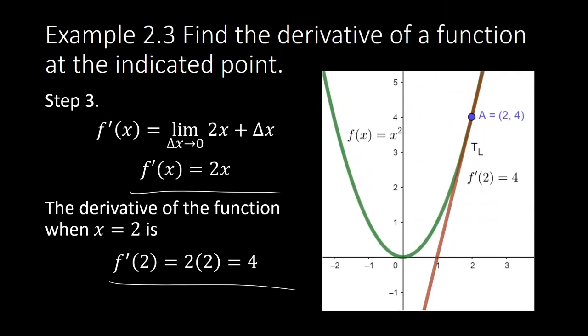So we have the function f of x equals x squared, and TL is the tangent line to the curve when x equals 2. The slope of the tangent line is f prime of 2, which equals 4. This shows the wisdom of the three-step rule: evaluating the limit of change in y over change in x is like a dragon — you don't challenge it head-on. You do it step by step; it's divide and conquer.